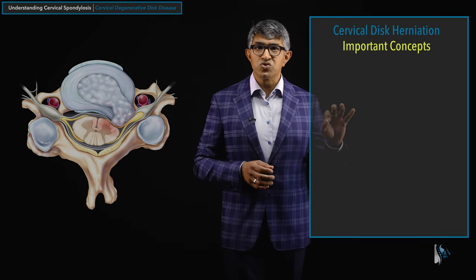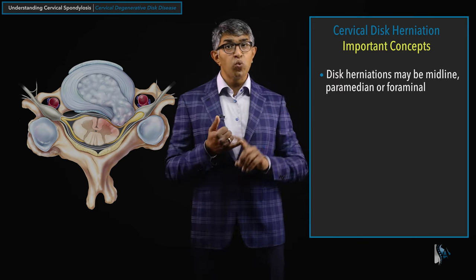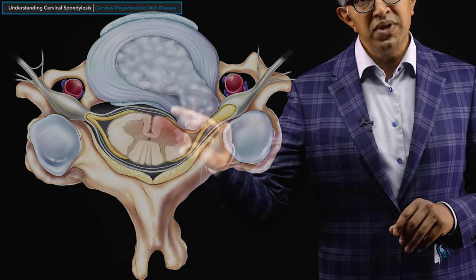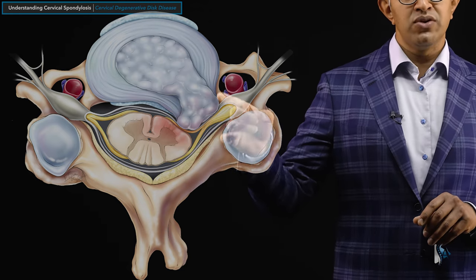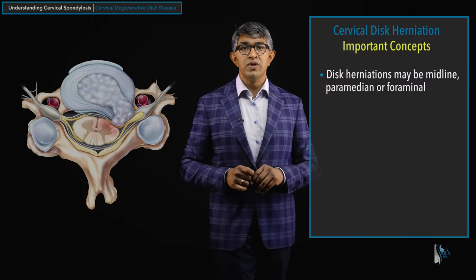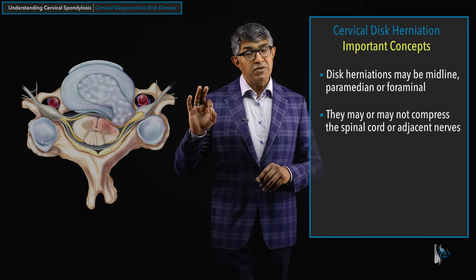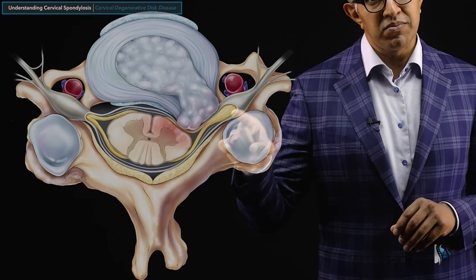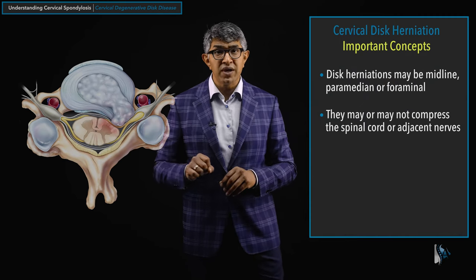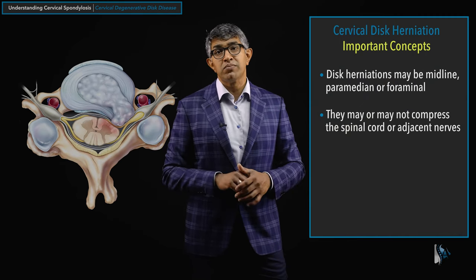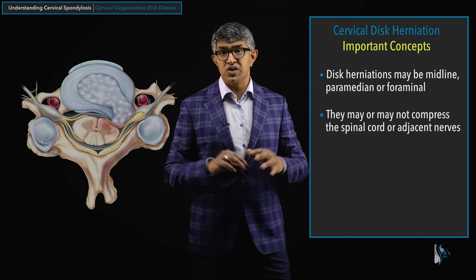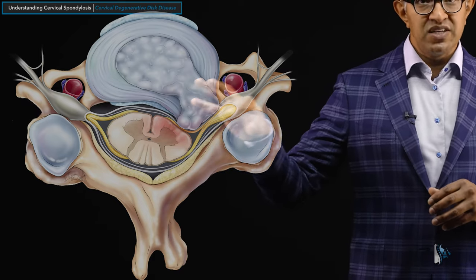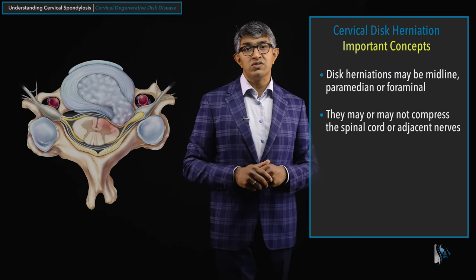To summarize cervical disc herniations: they can be midline, paramedian, or foraminal. They can be associated with compression of different structures — sometimes the spinal cord, sometimes the spinal nerve, sometimes both. We'll talk in the next chapter about the symptoms of disc herniations and other spondylitic findings, but here it's important to understand that herniation location depends on where the hole in the annulus is.